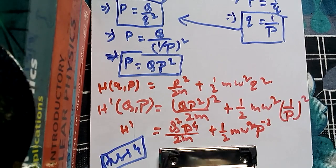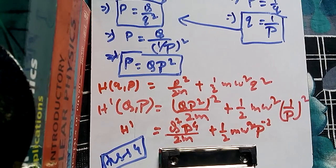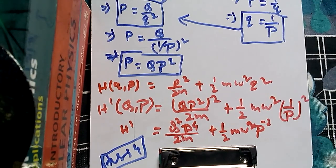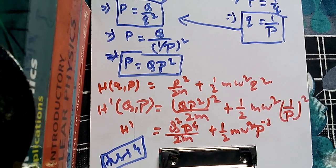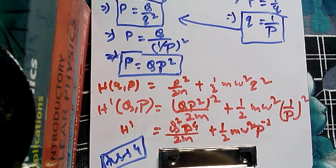So we found the relation between the old and new coordinates, substituted those into the old Hamiltonian to get the new Hamiltonian, and option 4 is the answer. Thank you.